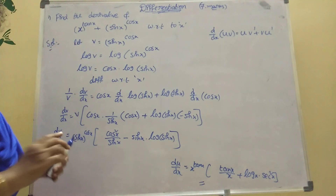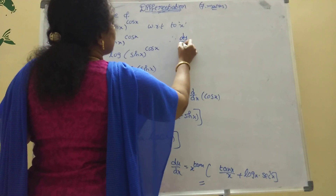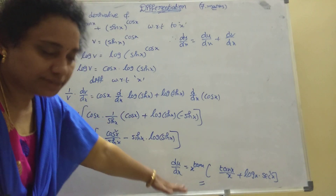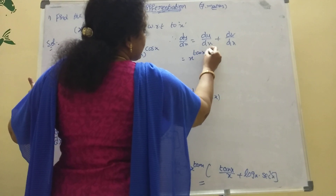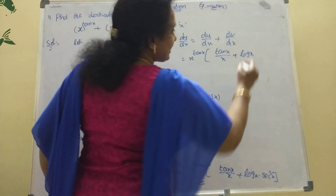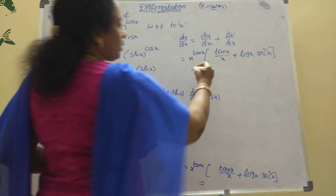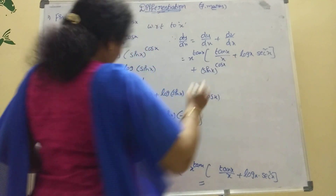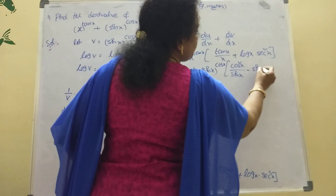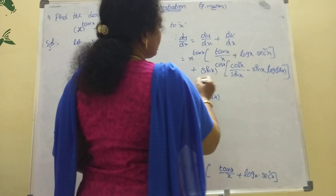Therefore, dy by dx equals du by dx plus dv by dx. The final answer is: x power tan x into (tan x by x plus log x into sec²x), plus sin x power cos x into (cos²x by sin x minus sin x into log of sin x). This is the final answer. It is a very important model.